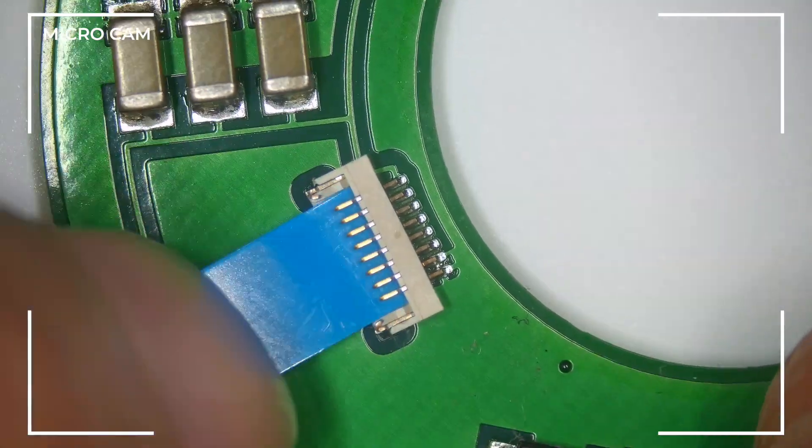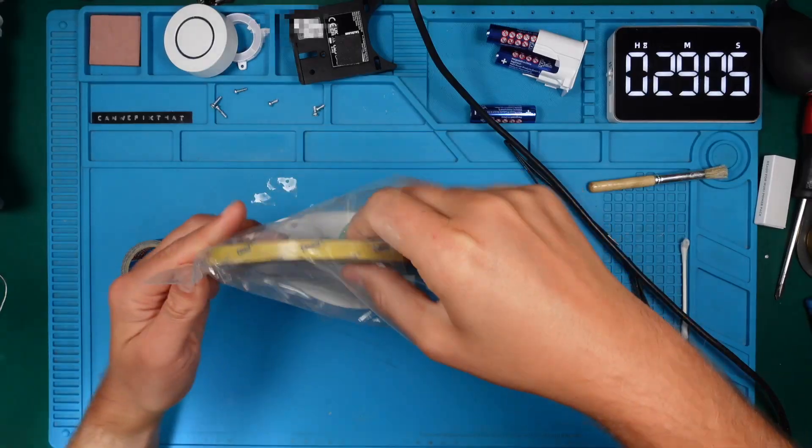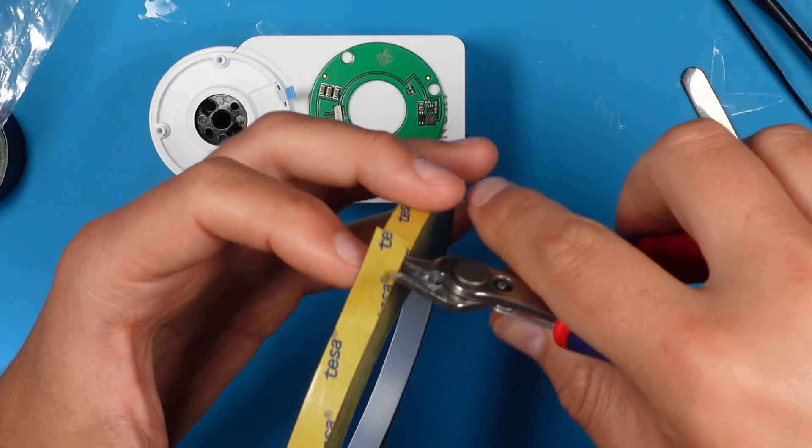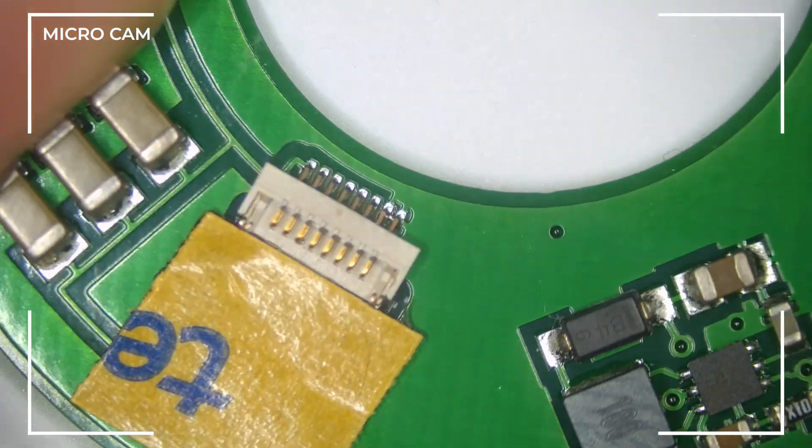As you can see, the ribbon cable sits in the right position. We need a way to fix it permanently. Let's use this double-sided tape and cut a small piece of it. Something like this.